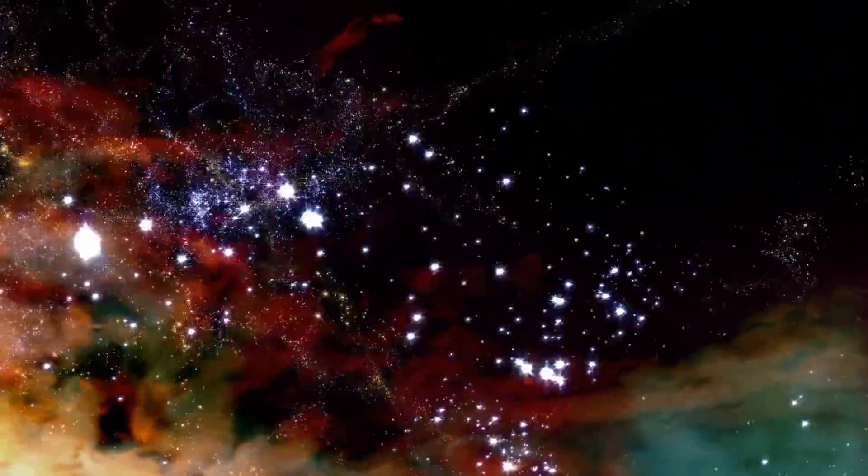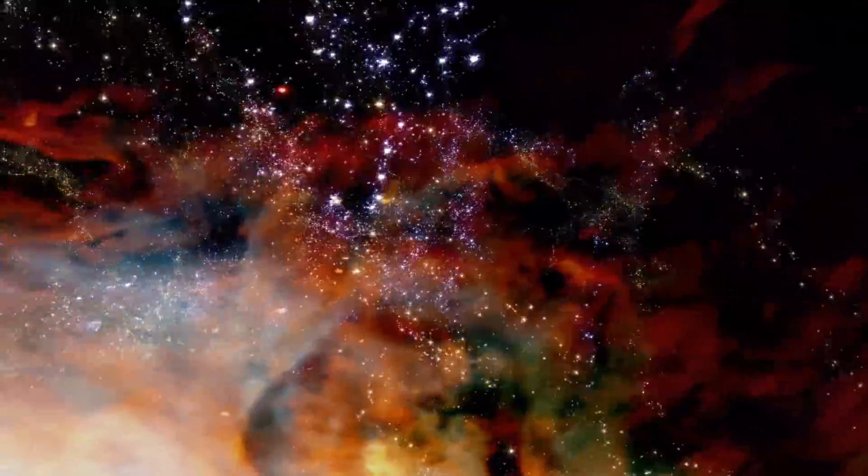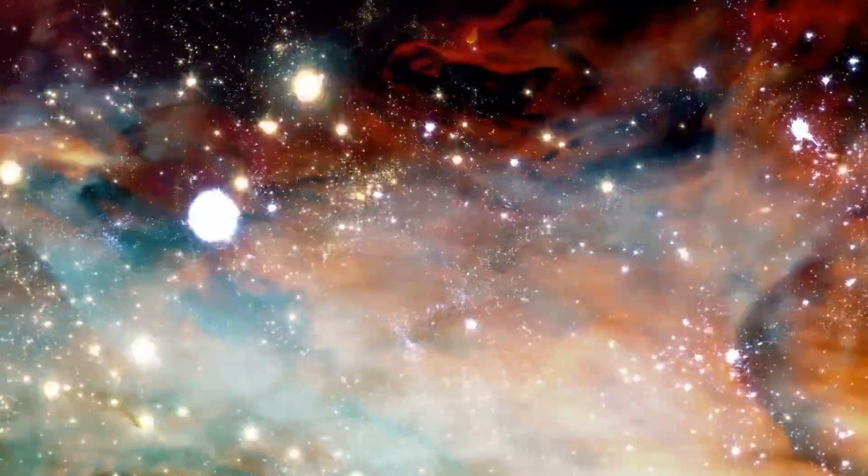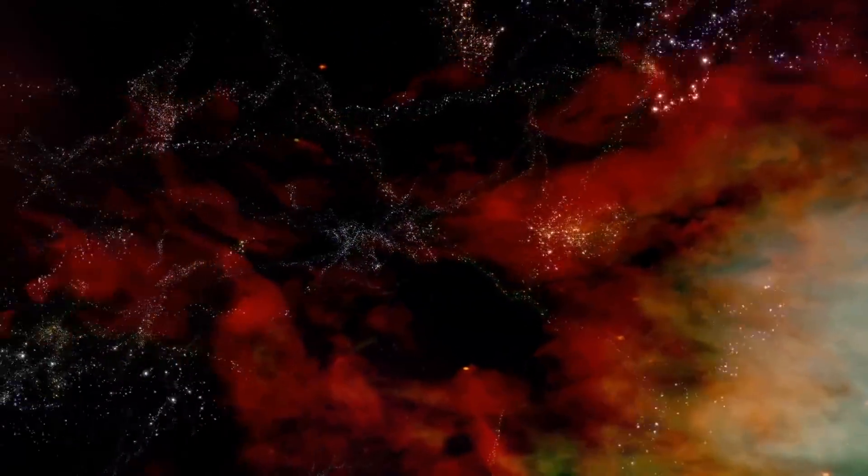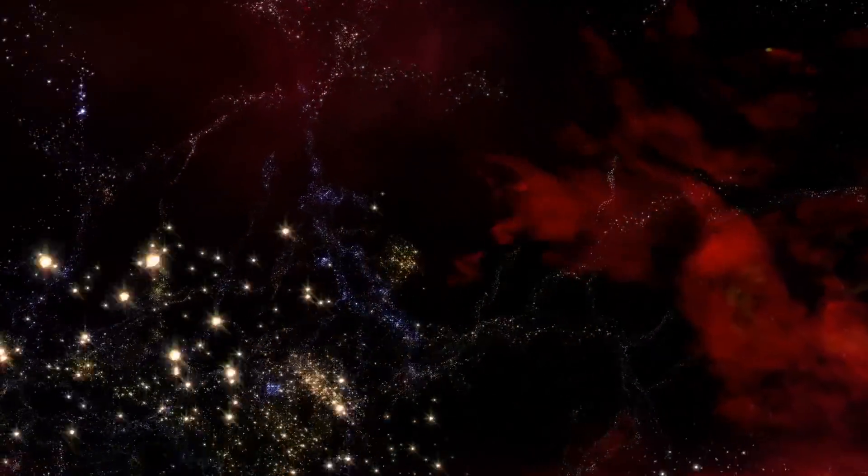Our planet can be found in the galaxy known as the Milky Way. A galaxy is a large group of stars, gas and dust bound together by gravity. They can be found everywhere in the universe and come in different sizes.